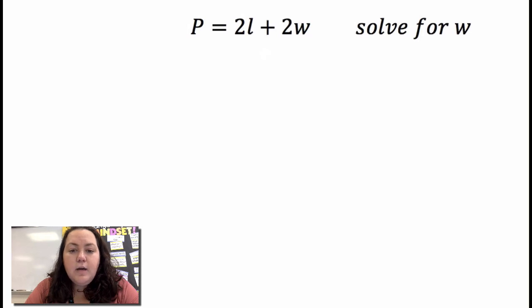P equals 2l plus 2w, solve for w. I want to get w by itself, it's connected to a 2l by addition, so I'm going to subtract 2l on both sides, so I have p minus 2l equals 2w.